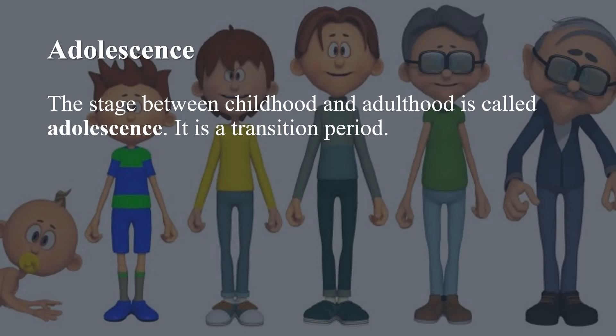First of all, let us understand the meaning of Adolescence. The stage between childhood and adulthood is called Adolescence, and it is a period of transition. During this period, the body attains reproductive maturity. Thus, the period of life when the body undergoes changes leading to reproductive maturity is called Adolescence.